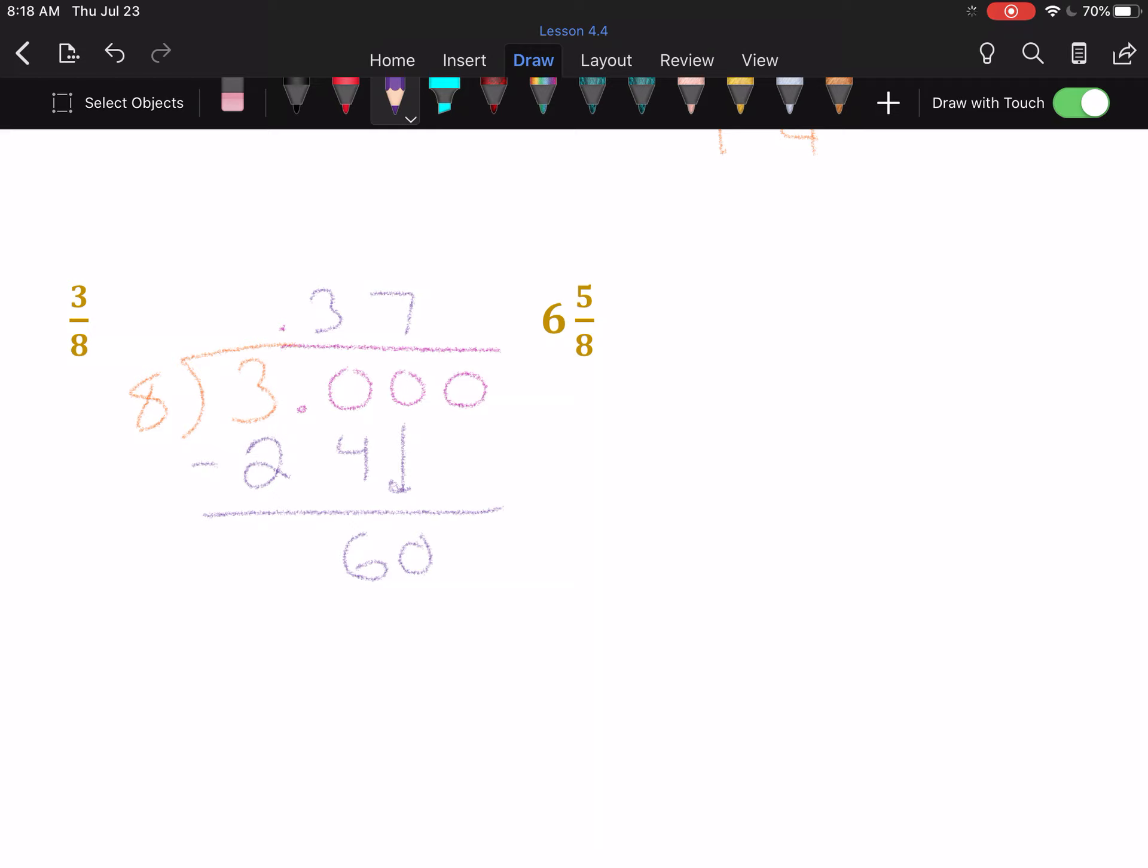Eight goes into sixty seven times. Seven times eight is fifty-six. When I subtract those, I get four. Add another zero and drop it. Eight goes into forty five times, and we finally have no remainder. So 0.375 is the decimal form.